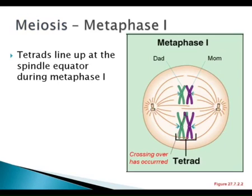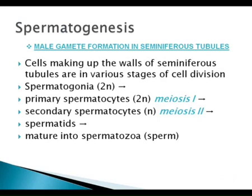Does everybody understand what the crossing over was — in prophase and such, in metaphase? So here's what we're left with. This slide is just showing you that in meiosis I, as it's going through meiosis I, you are a primary spermatocyte. After you split, what are you known as? Secondary spermatocyte. So at the end of meiosis I you'd be known as a secondary spermatocyte. Then when you start meiosis II, you end up being a spermatid, and then you mature into a spermatozoa sperm.